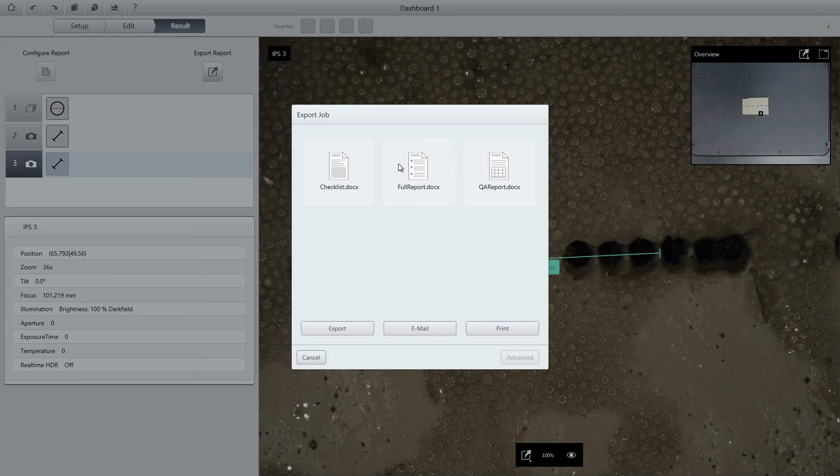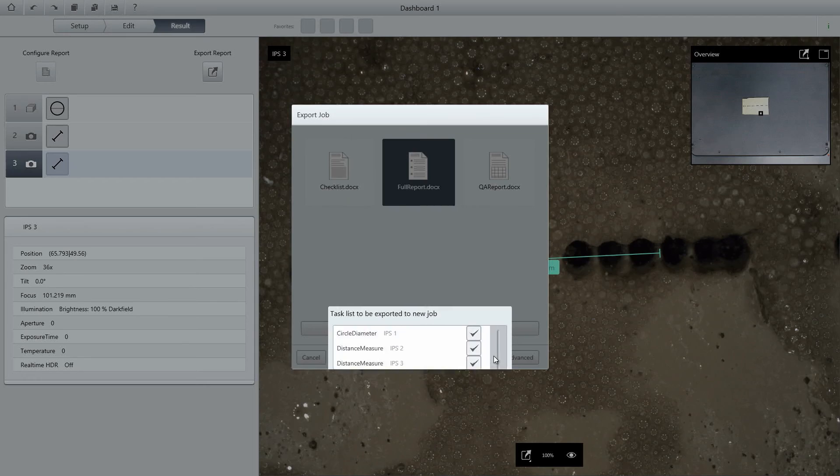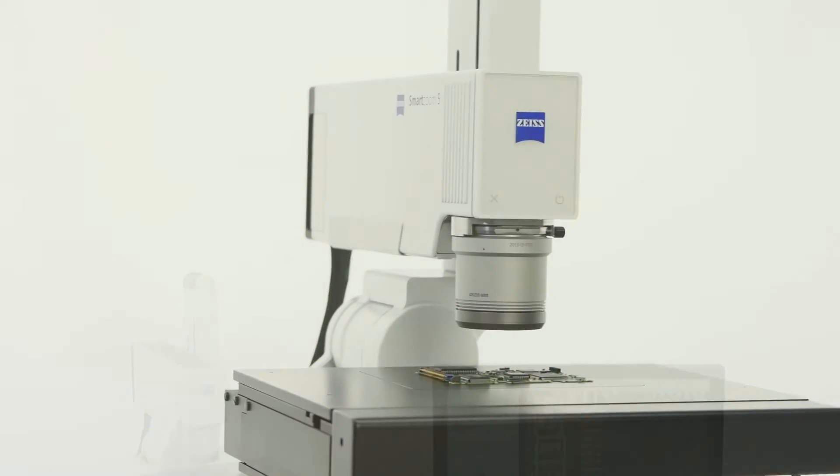Create inspection reports with just one click. ZEISS SmartZoom 5 makes it simple and efficient to create quality control plans for reproducible inspection of all identical samples.